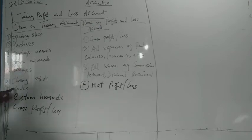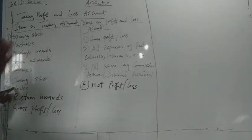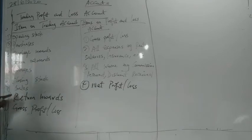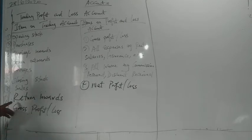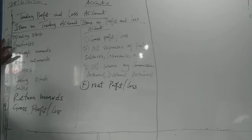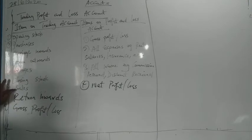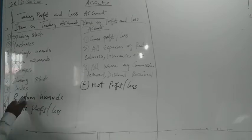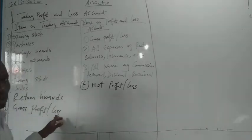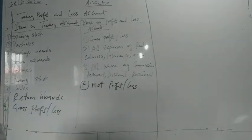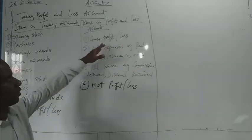Return inwards is only deducted from sales. Return outwards is only deducted from purchases. When customers return goods to the business it is return inwards; when you return goods to the supplier it is return outwards. Whatever figure you get on the credit side, you compare it to the cost of goods sold, and you now determine whether you have gross profit or gross loss.